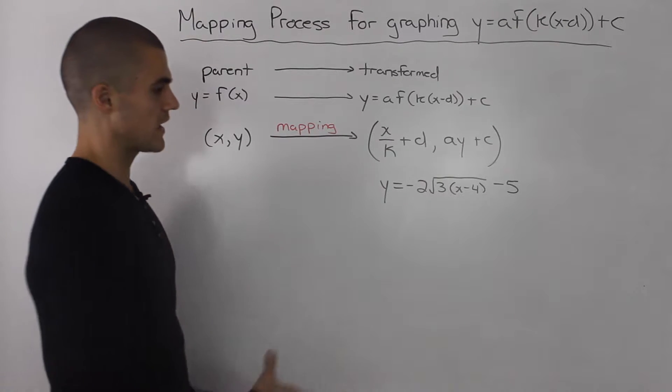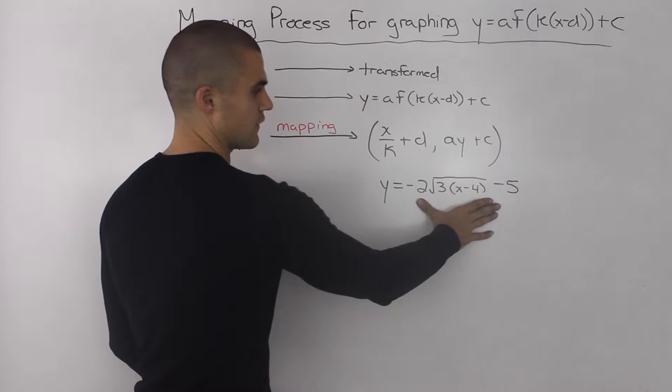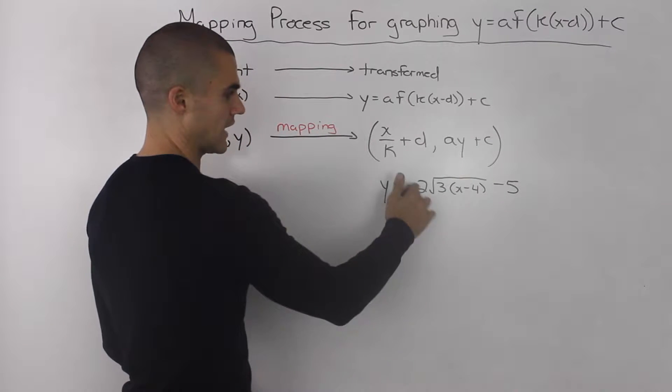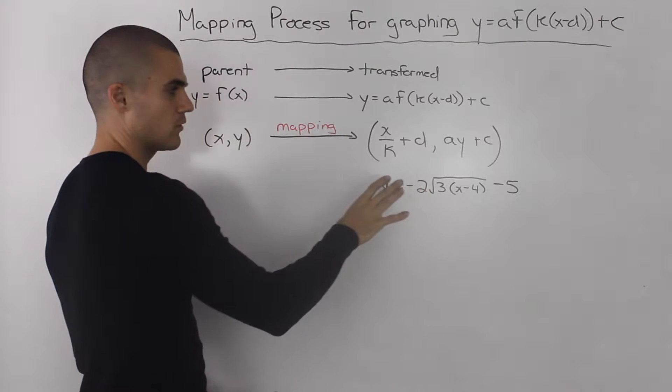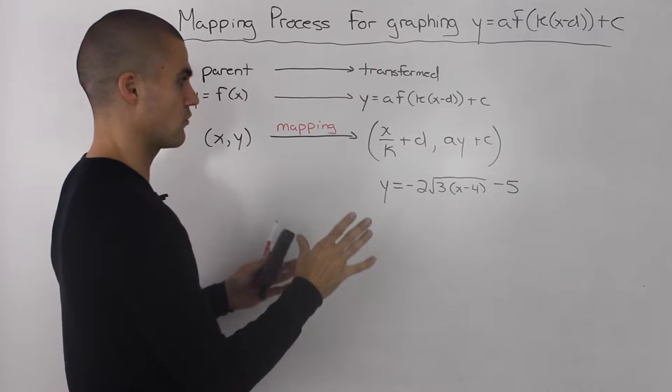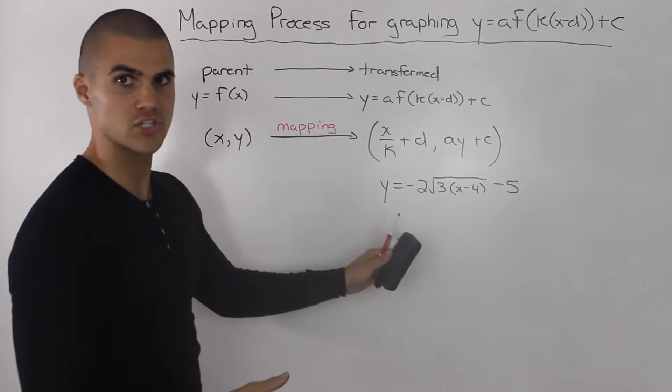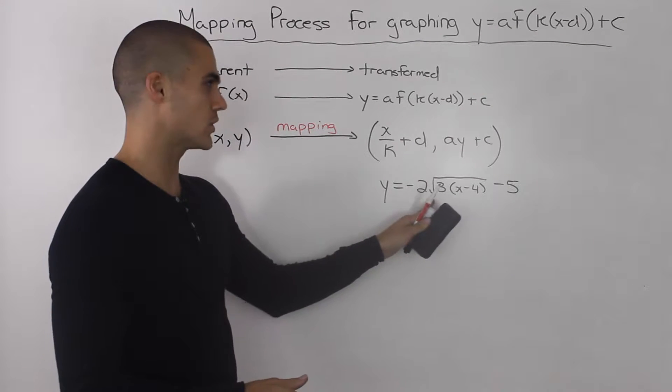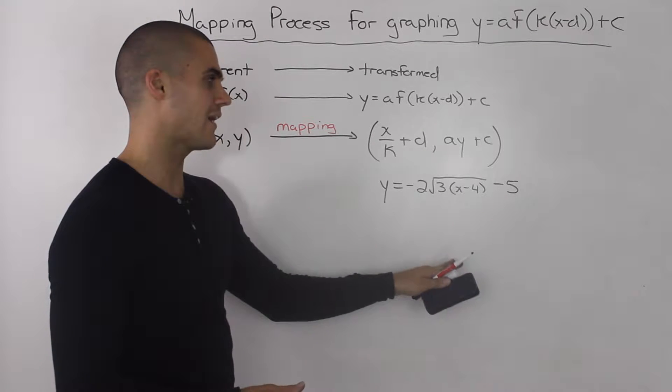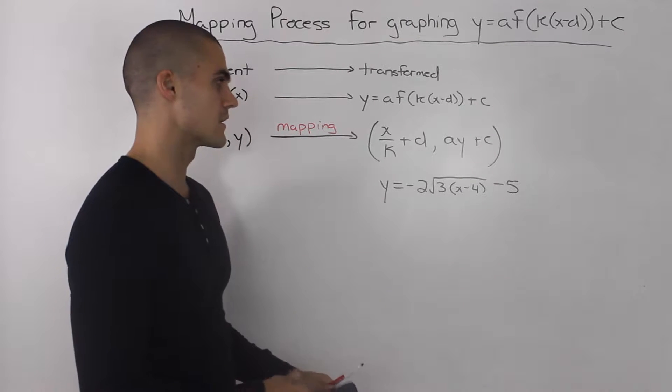Let's say that we have to graph this function right here: negative 2 root 3x minus 4 minus 5. Just by initially looking at it, it looks overwhelming. There's so many transformations going on, so it's hard to visualize how this graph is going to look, where to start a table of values, etc.